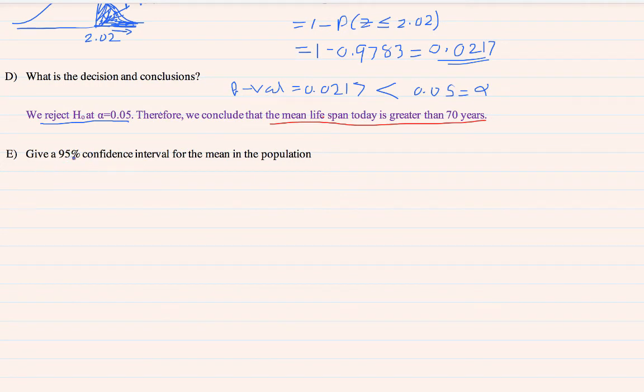Now, they are asking give a 95% confidence interval. Again, you know, sigma is known, sigma is given. Therefore, we can use the equation X bar plus or minus Z star, Z star sigma over root n, sigma over root n. Now, how do we find the Z star? We know all the terms, but Z star. How do we find the Z star?